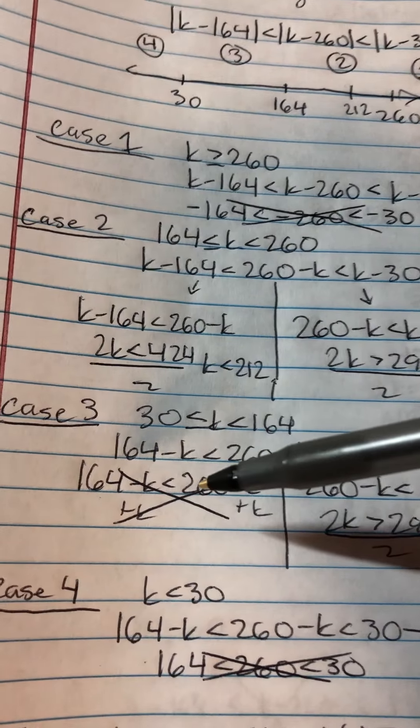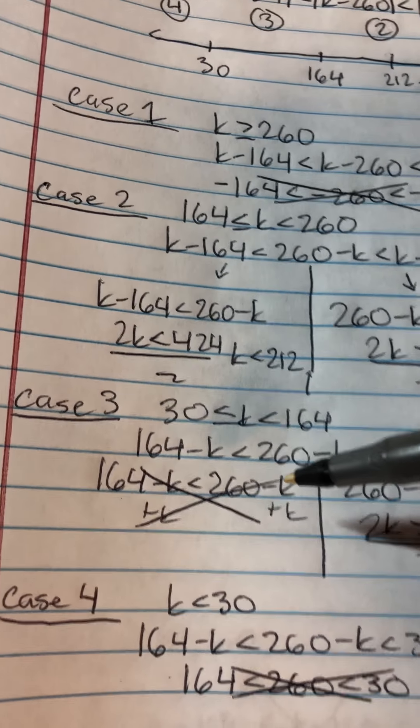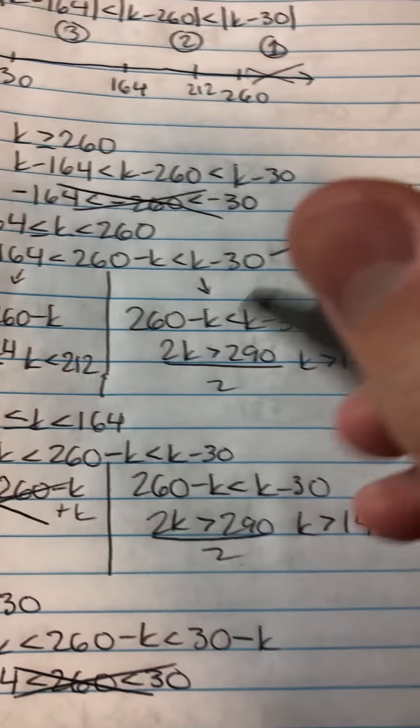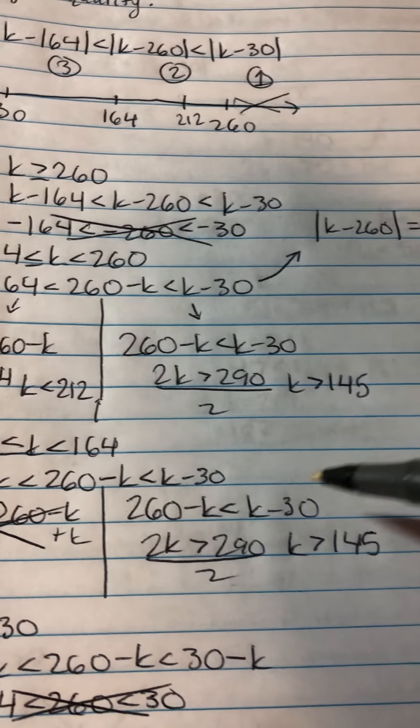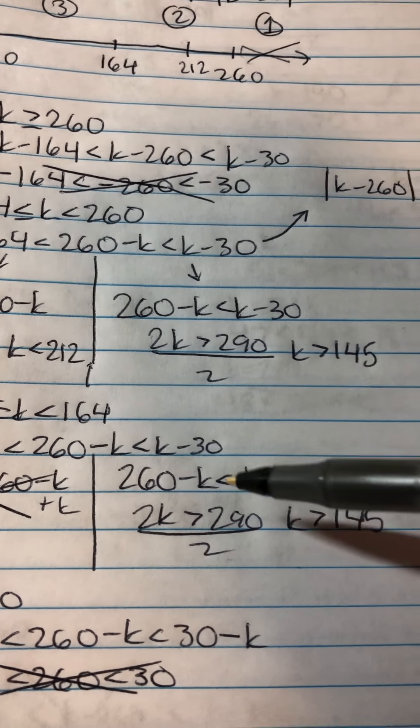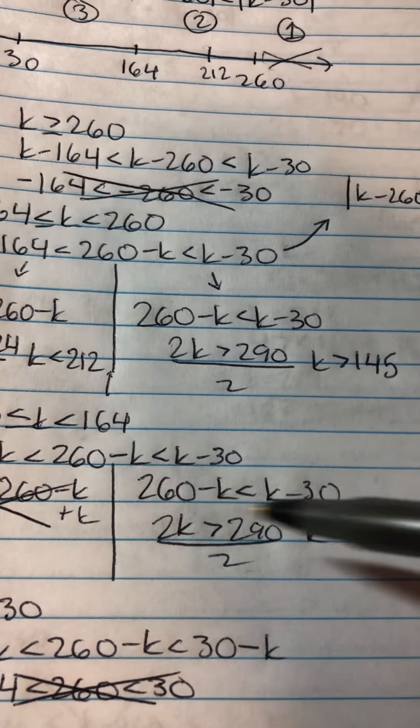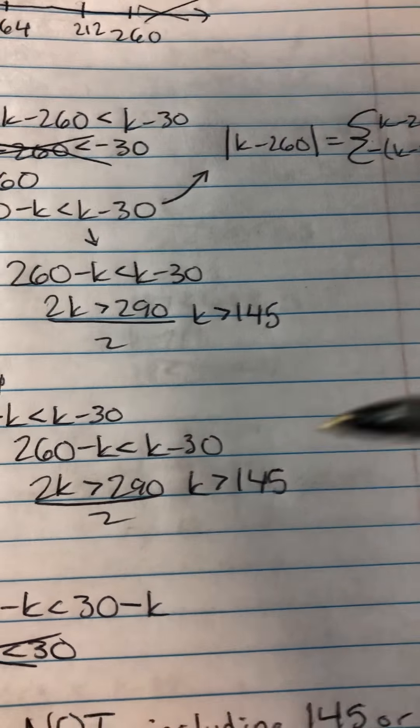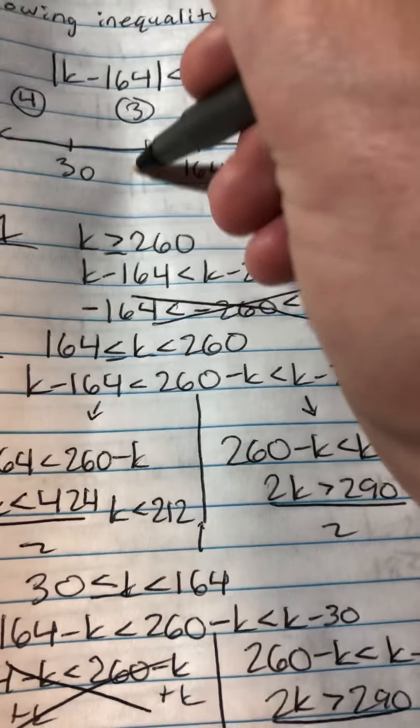So on the left side, the k's cancel out, so that wouldn't work out. But the right side, I got 260 minus k is less than k minus 30. I brought the 2k together. 2k is greater than 290 divided by 2. And you get k is greater than 145. So now I can put 145.